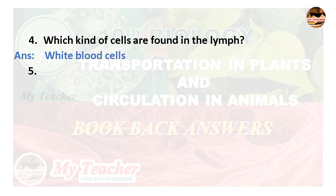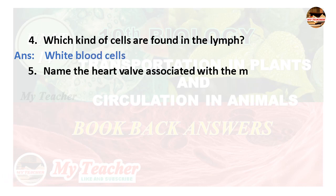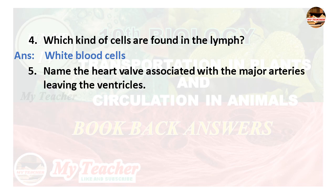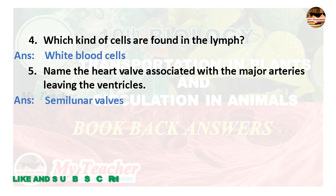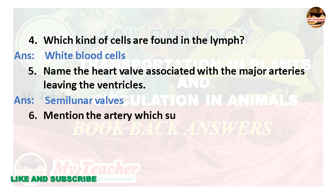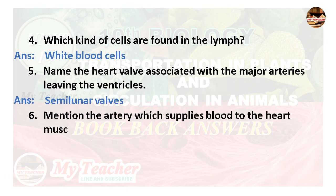Fifth: Name the heart wall associated with the major arteries leaving the ventricles — Answer: Semilunar valves. Sixth: Mention the artery which supplies blood to the heart muscle — Answer: Coronary artery.